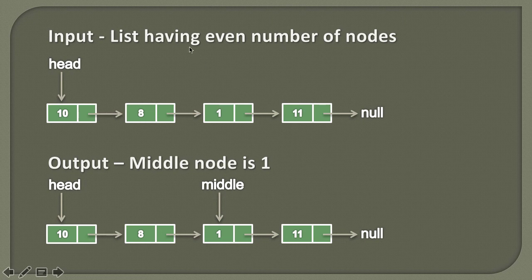Currently, if you see this linked list, it has an even number of nodes. If you count the number of nodes, it has four nodes: 10, 8, 1, 11. In order to find the middle node for this linked list, there are two possibilities — the middle node can be the second node or the third node. For this algorithm, we will say that the middle node would be the third.